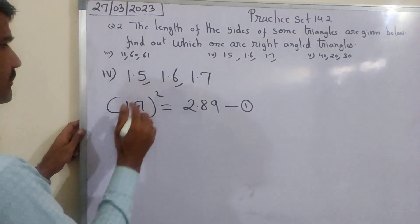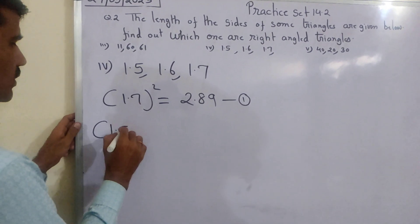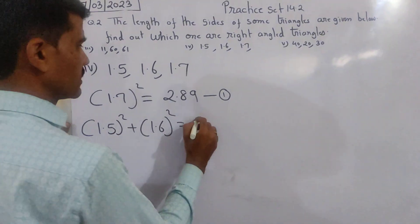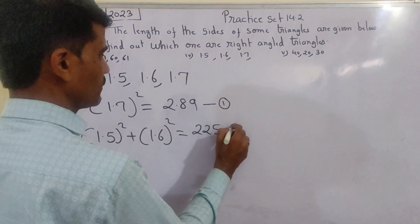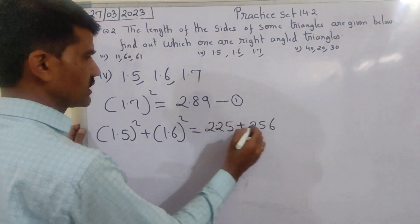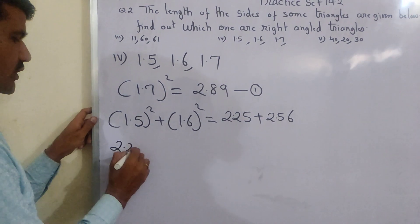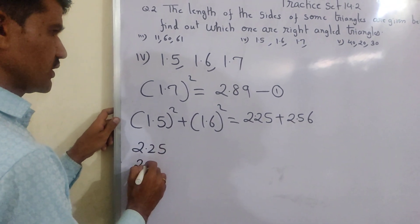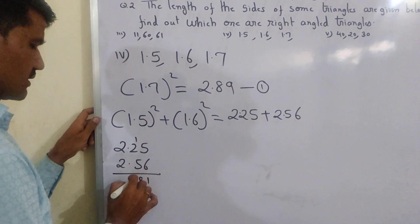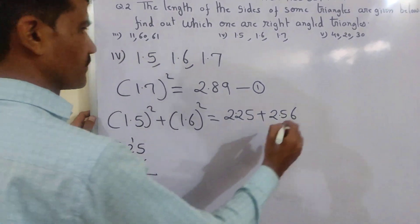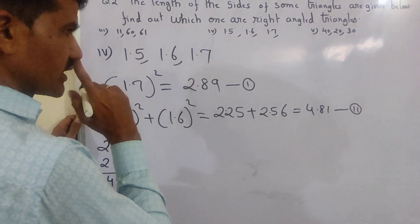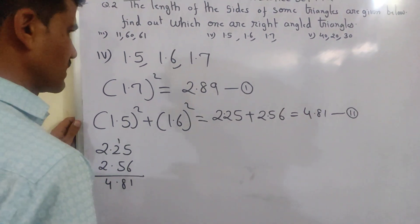Ab 2, chote number: ek number 1.5 square plus dusara 1.6 square. Paindra cha varga 2.25, 16 cha varga 2.56. Adding these: 2.25 plus 2.56 equals 4.81.